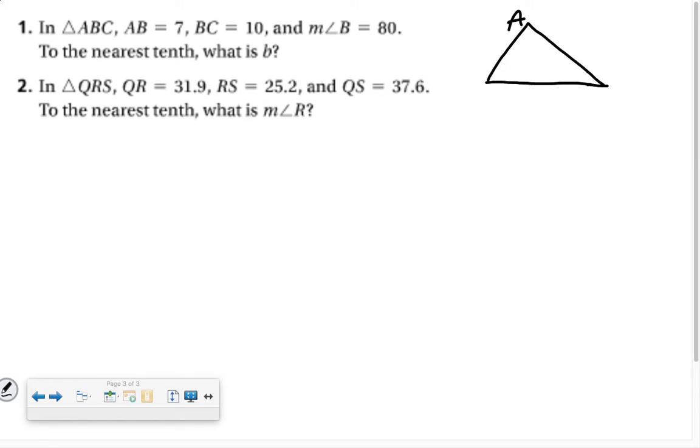So AB is 7, BC is 10, and the measure of angle B is 80 degrees. Okay, so this is little letter C, this 10 is lowercase a, and this is lowercase b.